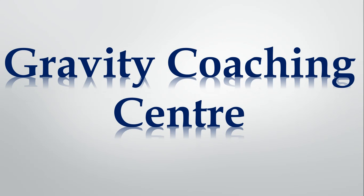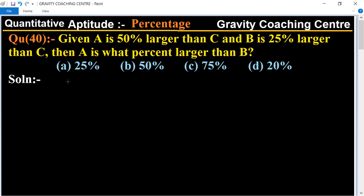Welcome to our channel, Gravity Coaching Center. Quantitative Aptitude, Chapter: Percentage. Question number 40: Given A is 50 percent larger than C and B is 25 percent larger than C, then A is what percent larger than B?